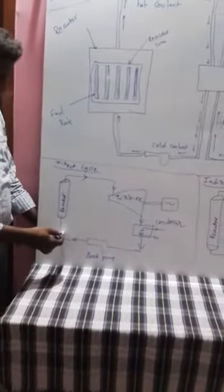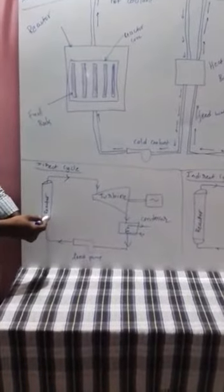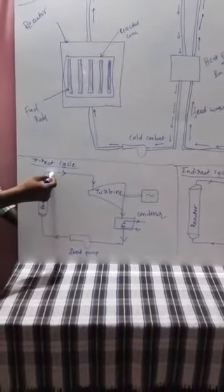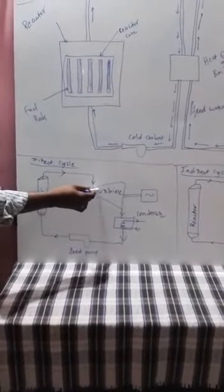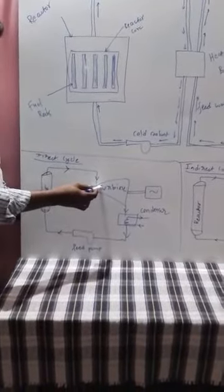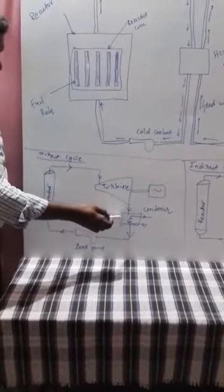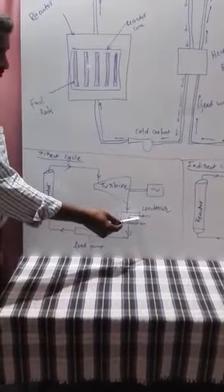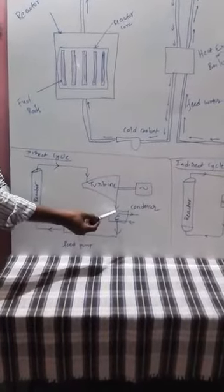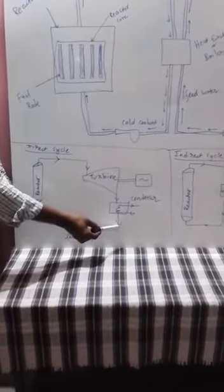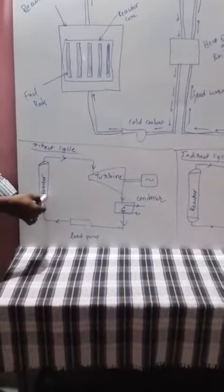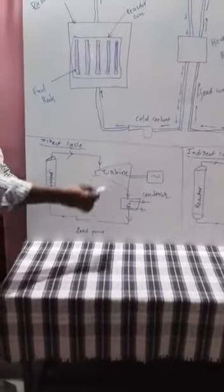The working fluid, which is water, is pumped by the feed pump and enters the nuclear reactor directly. There, the water absorbs the heat and steam is formed. This high-energy steam enters the turbine and produces work as it expands over the turbine blades. The low-pressure, low-temperature steam then enters the condenser, where it rejects the latent heat of condensation to the circulating cooling water. The steam condenses into liquid, called condensate, which enters the feed pump and is pumped back to the reactor, completing the cycle.